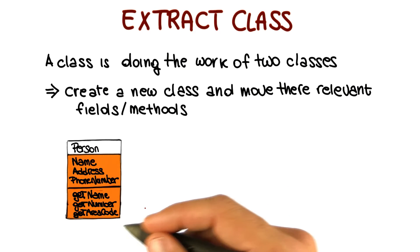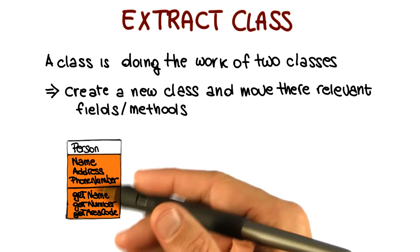Let's look at an example. In this case, we're going to use a UML-like representation for the class. We have this class, person, that ends up representing also a phone number.